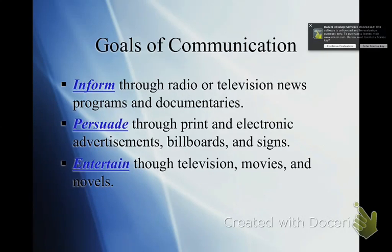So there are three things that we communicate: emotions, ideas, and information. But we're going to do it in three different ways. We're going to inform people, we're going to try to persuade people, and entertain people. We entertain with movies, books, television, and music. We persuade people through advertising — trying to get them to do what we want or purchase things. And we inform people with news broadcasts and radio announcements.